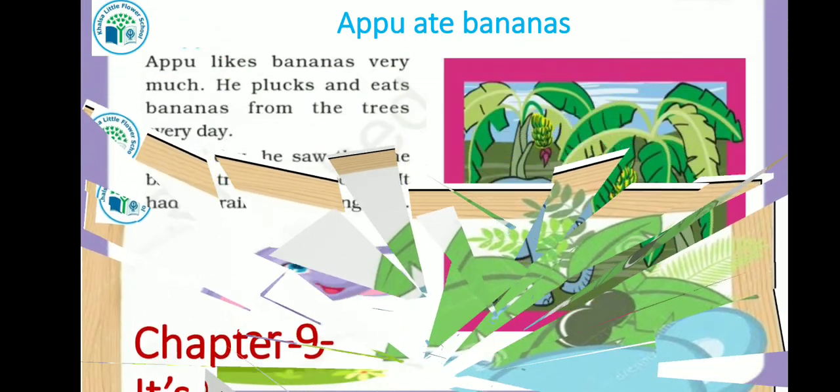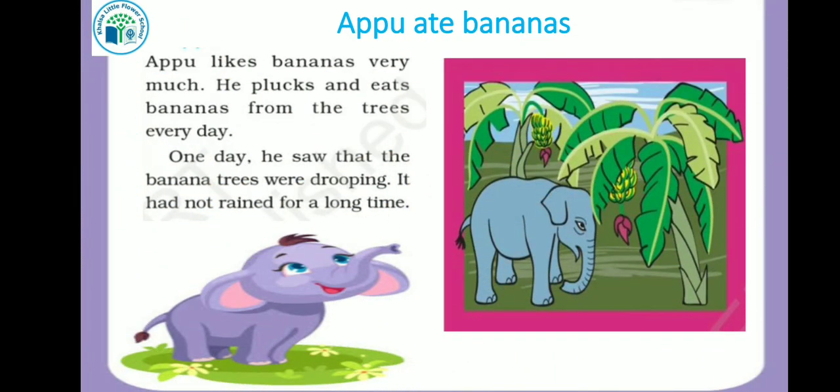Appu ate bananas. Appu likes bananas very much. Appu is an elephant who loves bananas very much. He plucks and eats bananas from the trees everyday. He breaks bananas from the tree and eats them.